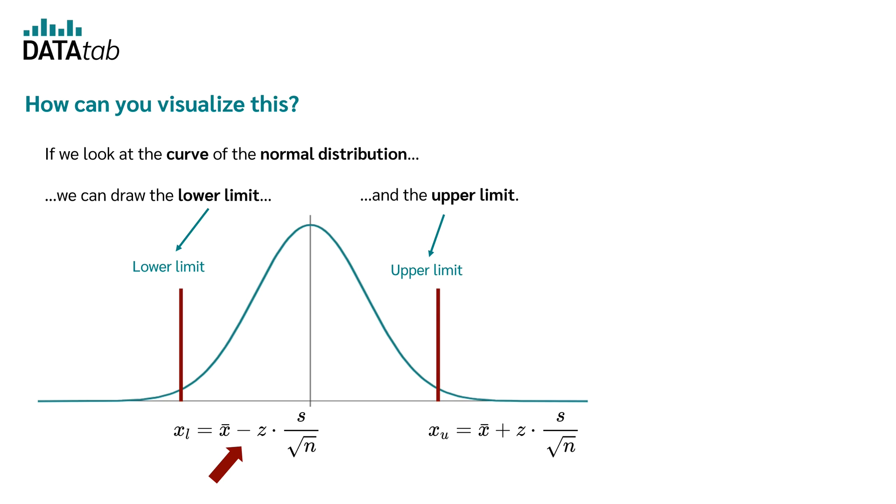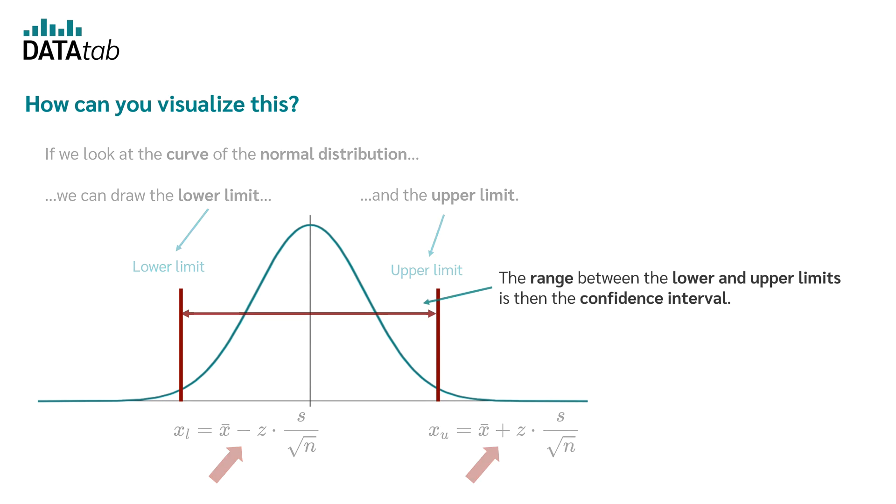And we have the upper limit with x bar plus z times s divided by the root of n, where we use here for the upper limit, the plus. The range between the lower and the upper limits then is the confidence interval. If a confidence level of 95% is selected, 95% of all values lie within this range.